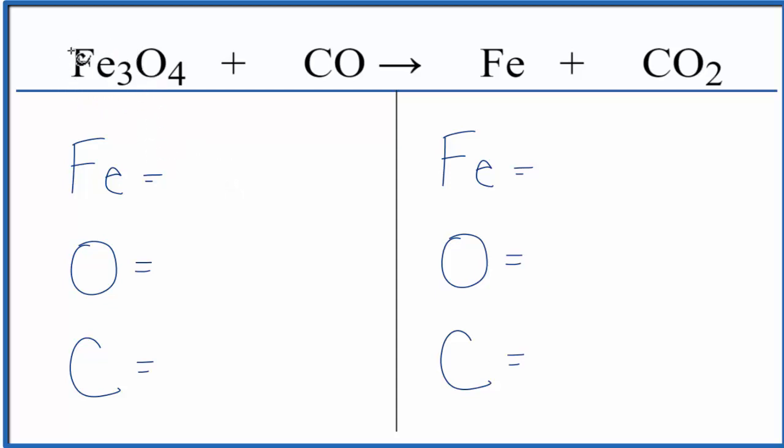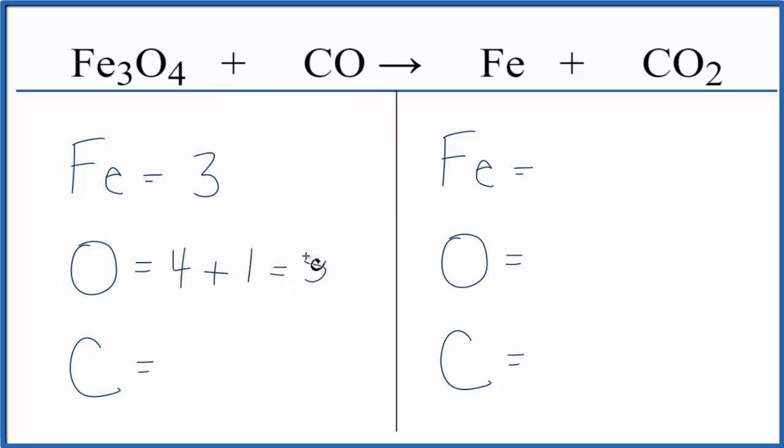On the reactant side, we have three irons, four oxygens, plus we have one oxygen here. So we have five oxygens, and we have the one carbon. Product side, we have one iron, two oxygens, and then we have one carbon.